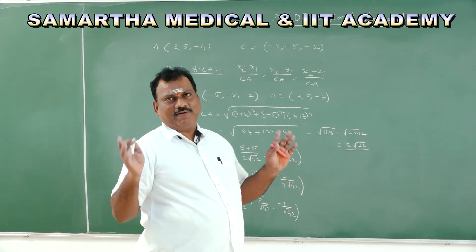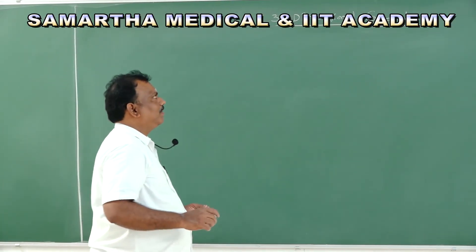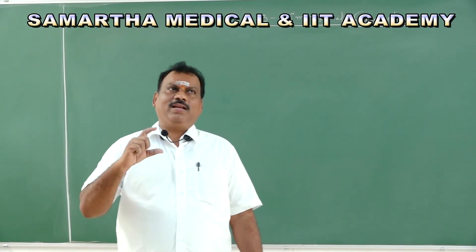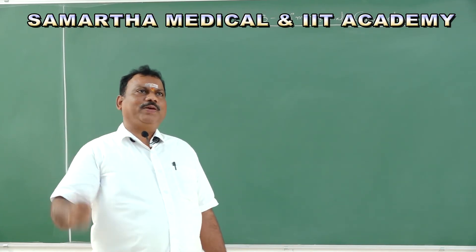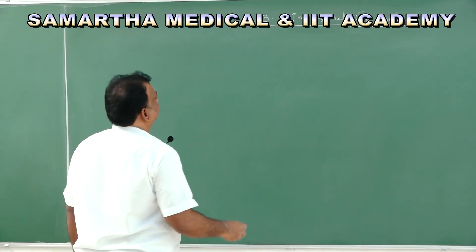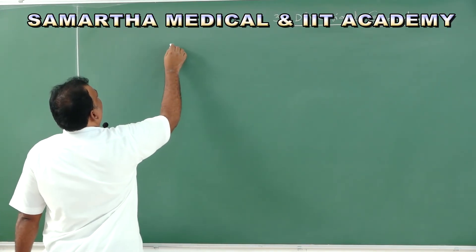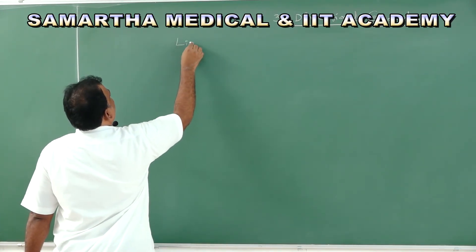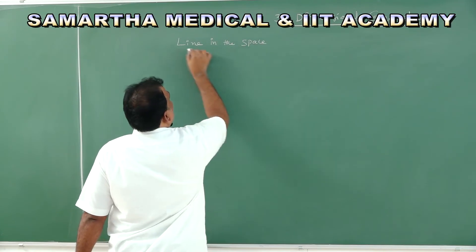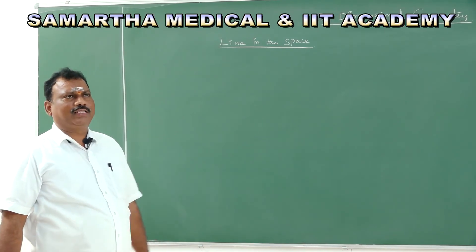So we completed Exercise 11.1. Now we go through lines and planes. In three-dimensional geometry, the chapter is divided into two parts: lines and planes. We learnt lines in the plane in first PU; now we learn lines in space.